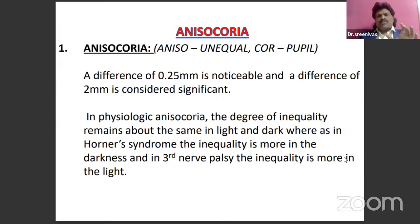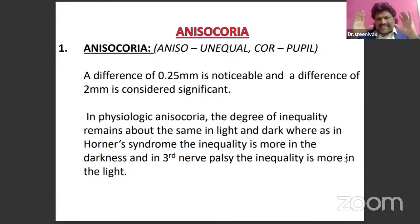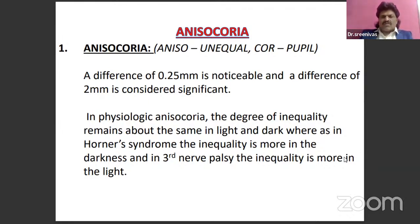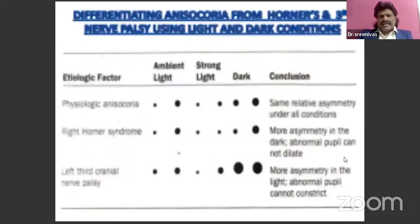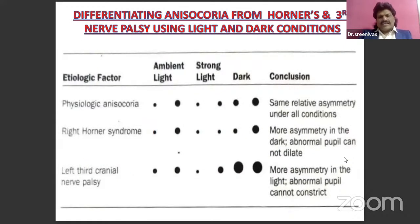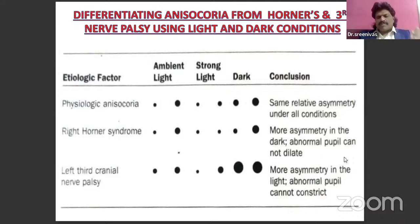Anisocoria: a difference of 0.25 mm is noticeable; a difference of 2 mm is considered significant. In physiological anisocoria, the degree of inequality remains about the same in both light and dark. In Horner's syndrome, inequality is more in the darkness — abnormal pupil cannot dilate. In third nerve palsy, inequality is more in the light — abnormal pupil cannot constrict. These three conditions summarize the approach to anisocoria.